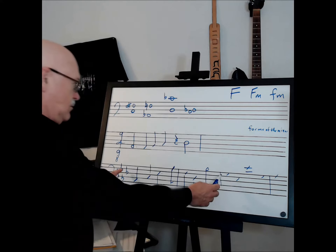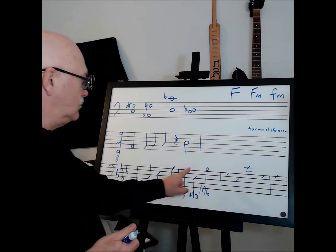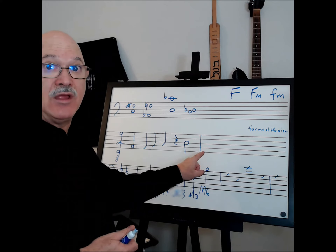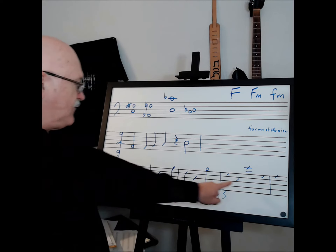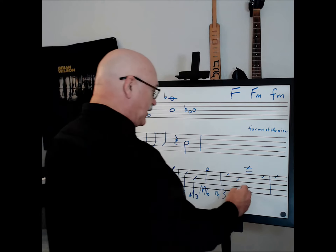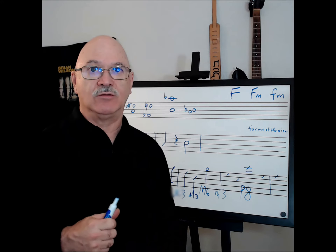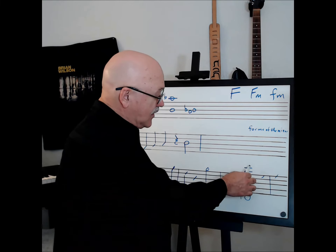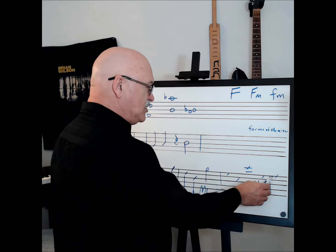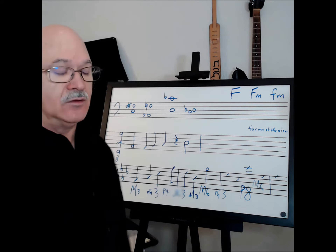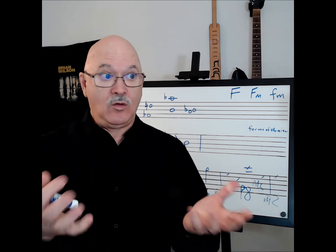G to B-flat: the key of G has one sharp — F-sharp. G to B is a major third, so G to B-flat is a minor third — lowercase m with a dash. E-flat to G is a major third. E-flat to E-flat is a perfect octave — P8. G to E-flat: key of G has F-sharp, so counting up — one, two, three, four, five, six — this is also a major sixth. G to A-flat — quite a few people missed that. You might think 'I know it's an A,' but it's an A-flat, and that is a minor second.